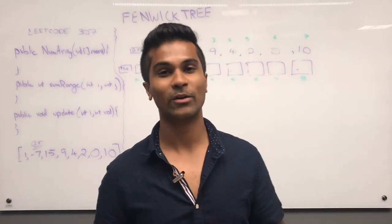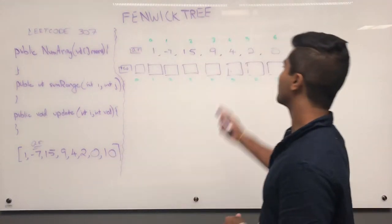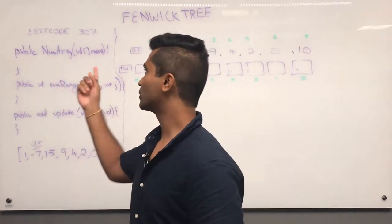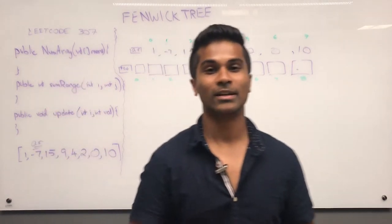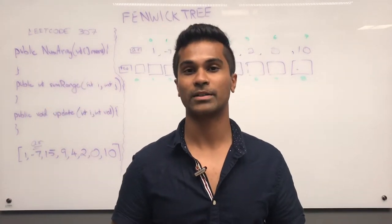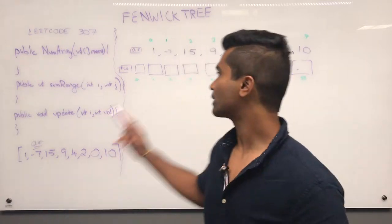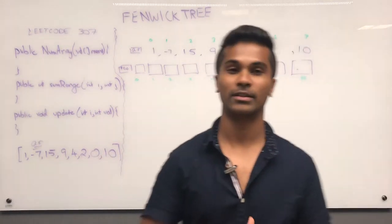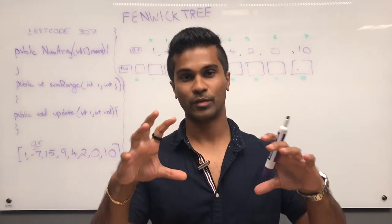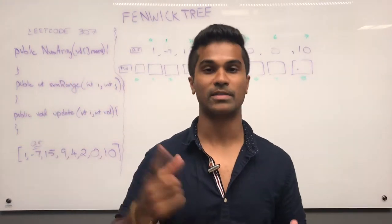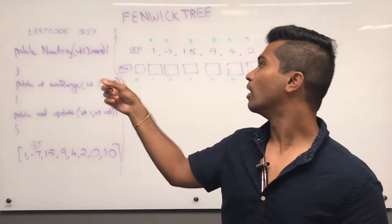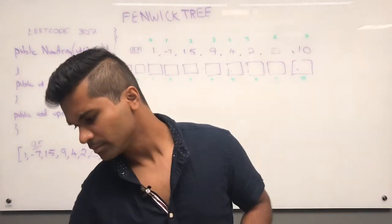What's up everyone? Today we're going to be going over Fenwick Tree and then we're going to be going over LeetCode 307. This video is going to be a little bit longer than my usual ones because I'm going to actually explain the data structure, how to derive it and draw the diagram, and then I'll use that to solve 307.